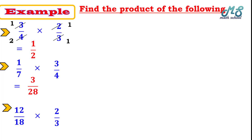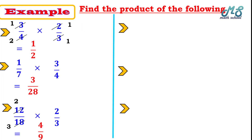Next: 12 over 18 times 2 over 3. First, simplify 12 over 18 — 12 and 18 are both divisible by 6, their highest common factor. 12 divided by 6 equals 2 and 18 divided by 6 equals 3, giving us 2 over 3. Now we have 2 over 3 times 2 over 3: 2 times 2 equals 4 and 3 times 3 equals 9, so the product is 4 over 9.